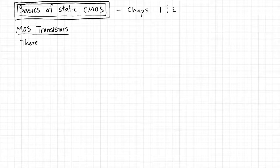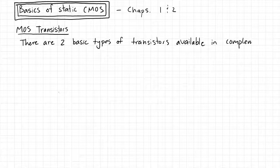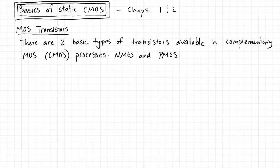There are two basic types of transistors available in complementary MOS — in other words, CMOS — processes: NMOS and PMOS, that is, N-type and P-type metal oxide semiconductor transistors.